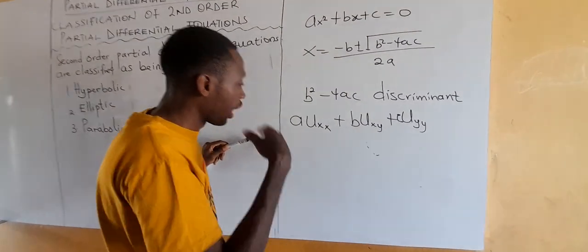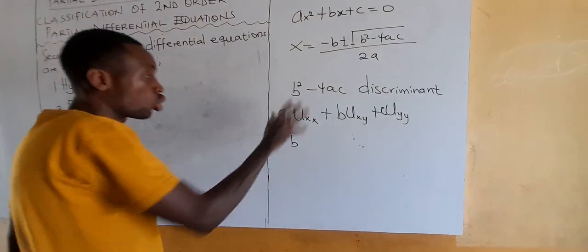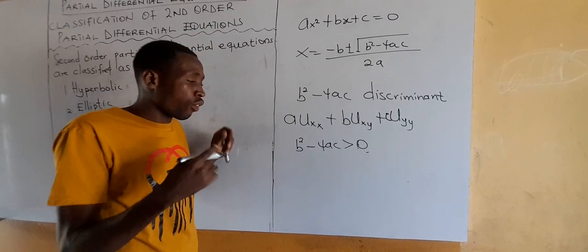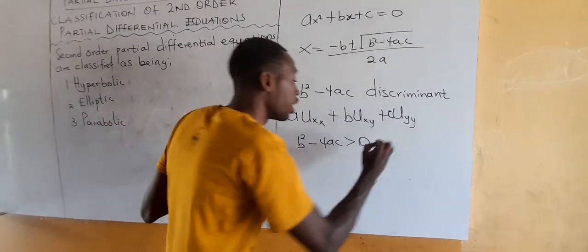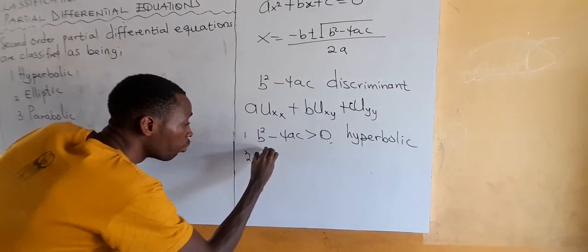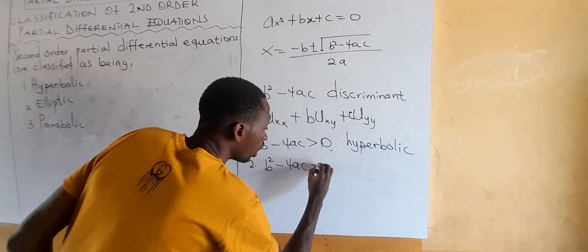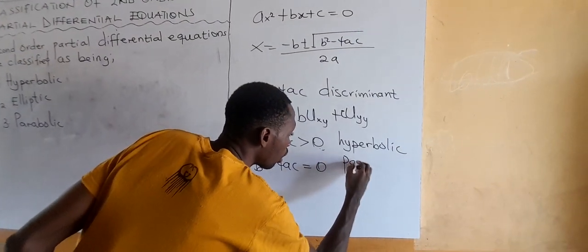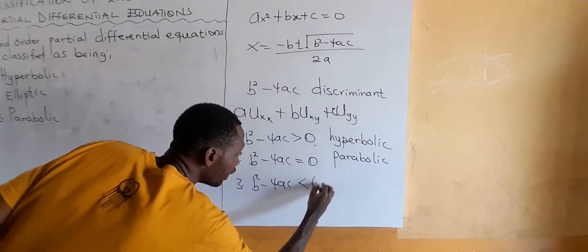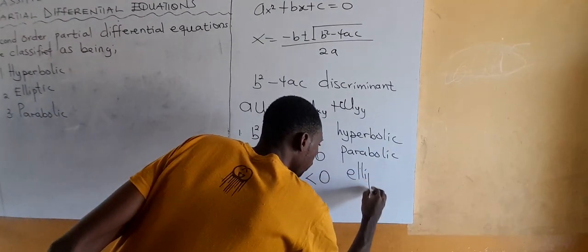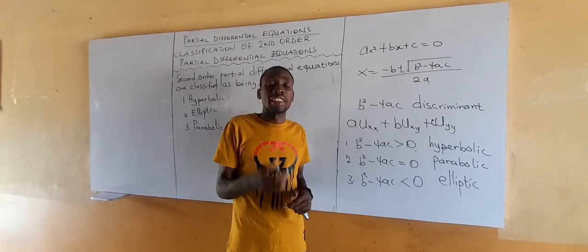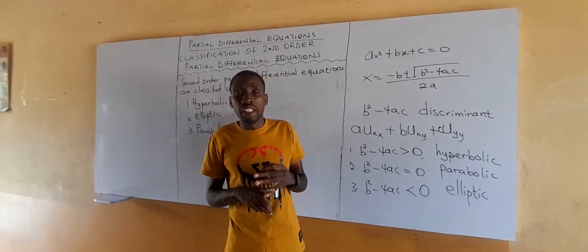How do we identify whether it is hyperbolic, elliptic, or parabolic? When we substitute the coefficients and compute B squared minus 4AC: if it is greater than 0, the second order partial differential equation is classified as hyperbolic. When B squared minus 4AC equals 0, we consider it parabolic. If B squared minus 4AC is less than 0, then it is elliptic. Please take note of all three cases.